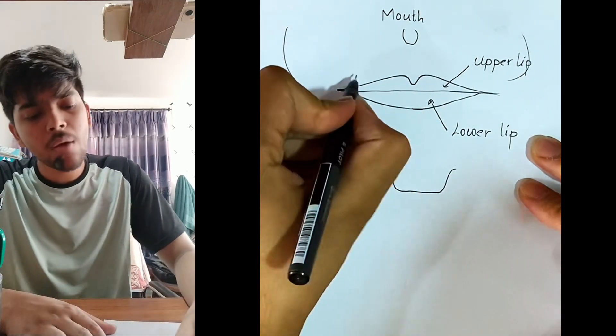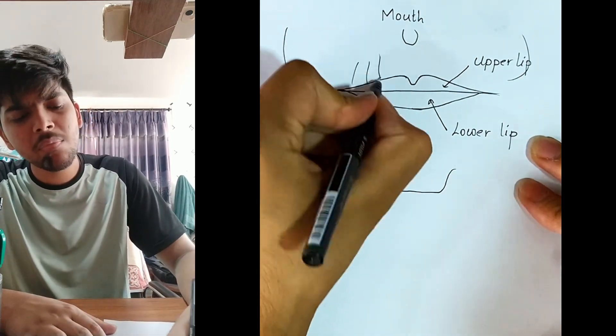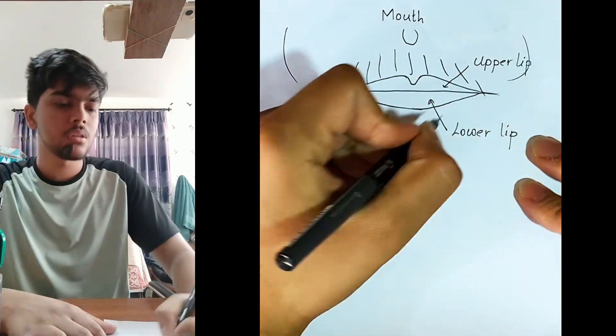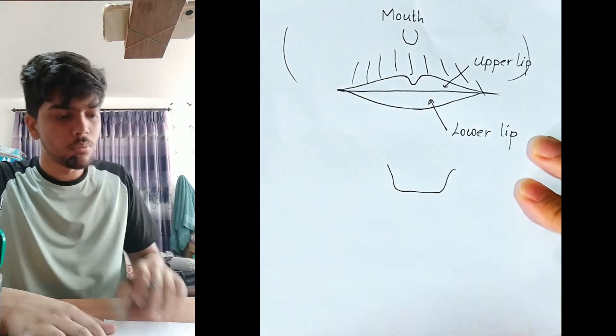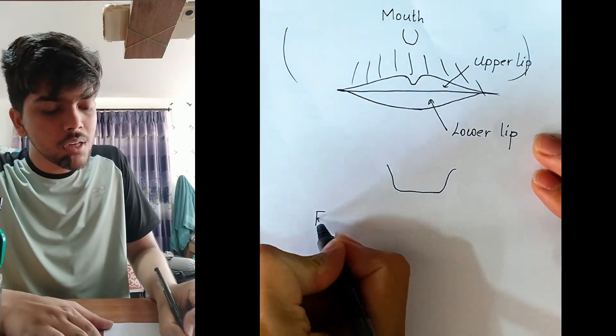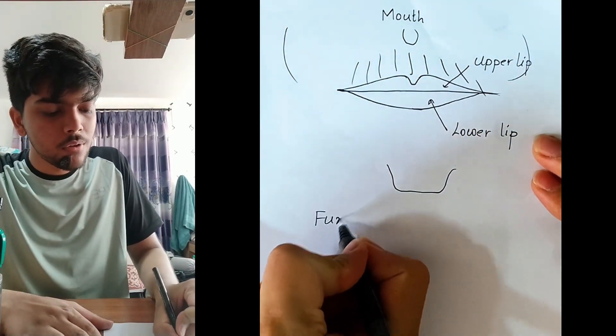Between the mouth and nose there is the philtrum (junga). This is the external mouth area. The function of the mouth — mookh ko function.